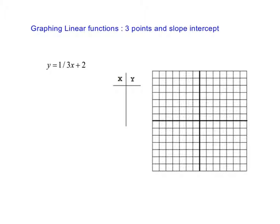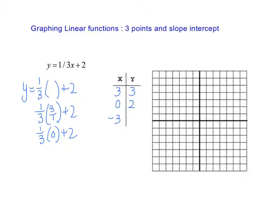To graph a linear equation, we can do two methods. We can pick three points. So for instance, I'm going to pick 3 and 0 and negative 3. And the reason I'm doing that is because it has a fraction in it. So I have y equals 1 third x plus 2. So if I put a 3 in here, this would be 1 third times 3 over 1 plus 2. So 1 plus 2 is 3. If I put a 0 in there, 1 third times 0 is just 0 plus 2. And if I put a negative 3 in here, I'm going to have negative 1 plus 2, which is 1.